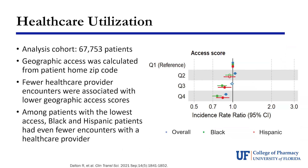We requested EHR data from adults with prescription records available within our health system who resided within the state of Florida, ending up with almost 68,000 patients. We calculated an estimated geographic access score from patient home zip code. We basically broke it into quartiles, with quartile one being the best access used as the reference group, and quartiles two, three, and four representing worsening levels of access to healthcare providers.